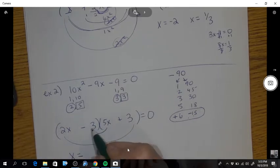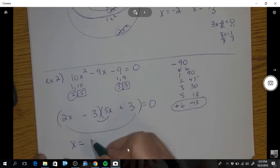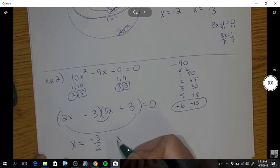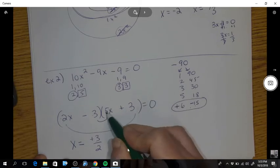So your solutions are, remember, opposite, divide. So positive 3 halves, negative 3 fifths.